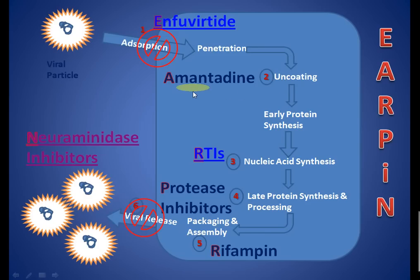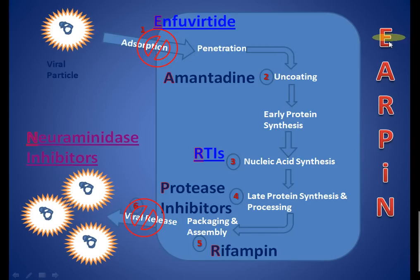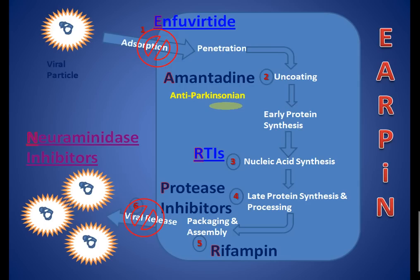A useful mnemonic is EARPIN: E for enfuvirtide, A for amantadine, R for RTIs and rifampin, P for protease inhibitors, and N for neuraminidase inhibitors — in the same order as the checkpoints. Also, amantadine is an anti-parkinsonian drug as well, because it increases the release of dopamine from dopaminergic neurons and prevents the re-uptake of dopamine, making it both a good antiviral and anti-parkinsonian drug.